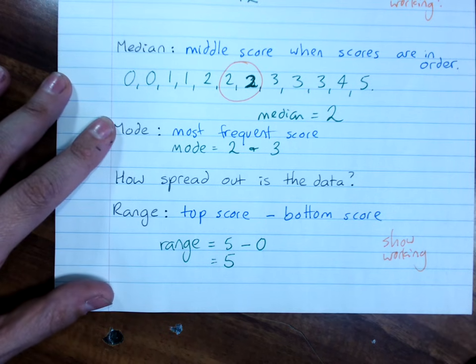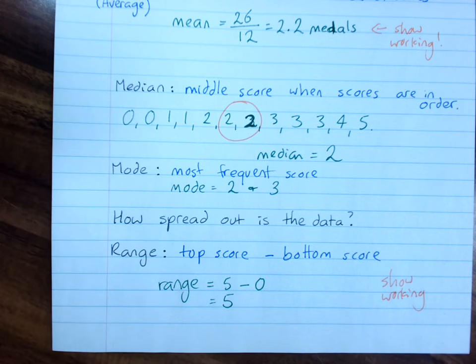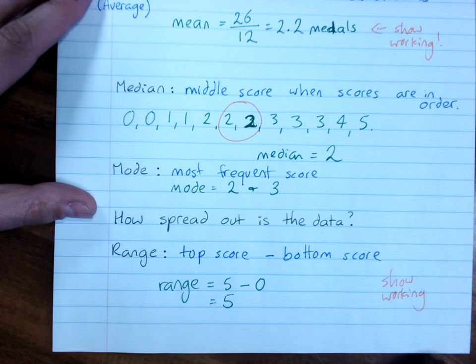So that tells me how spread out my class was. If I had another class and I was comparing it, and the range was 10, I'd know that class was even more spread out in their results.